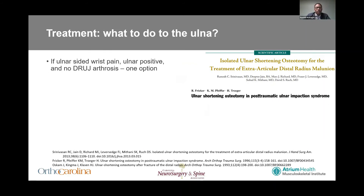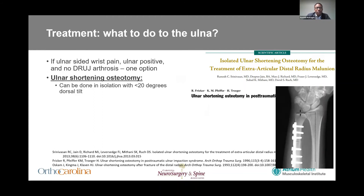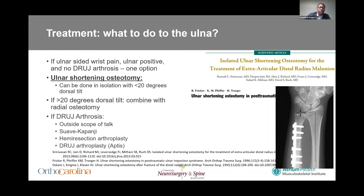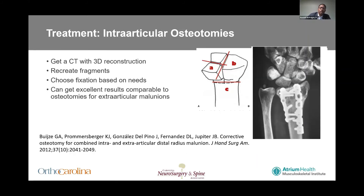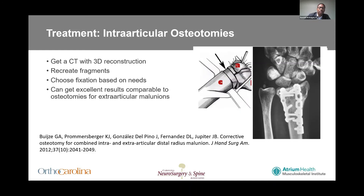Finally, what do you want to do to the ulna? If the patient has ulnar-sided wrist pain, is ulnar positive, and has no DRUJ arthrosis, one option is an ulnar shortening osteotomy. There are reports of doing this in isolation if the patient has less than 20 degrees of dorsal tilt, completely avoiding the radial osteotomy. But if the patient has greater than 20 degrees of dorsal tilt, it's probably prudent to combine it with a radial osteotomy. If the patient has DRUJ arthrosis, you should probably call a hand surgeon. For intra-articular deformities, get a CT with 3D reconstructions, recreate your fracture fragments, and choose fixation based on the needs of those fragments — excellent results are reported comparable to osteotomies for extra-articular malunions.